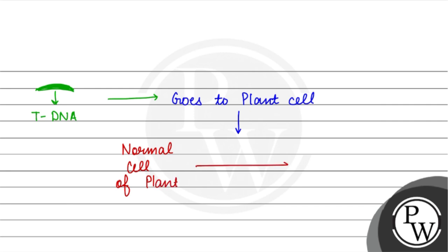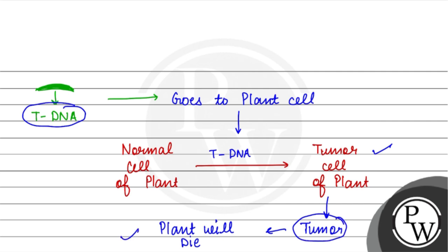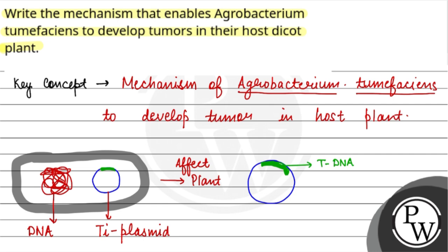The normal plant cell will change into tumour cells. The tumour cells of the plant will cause the tumour, and the plant will eventually die if not treated. This is how the T-DNA, which is a part of the Ti plasmid of Agrobacterium tumefaciens, infects the plant cell, converts normal cells into tumour cells, and causes tumour. This is the mechanism by which Agrobacterium tumefaciens develops tumours in the host dicot plant. That's it for the question. I hope you understand it well. All the best.